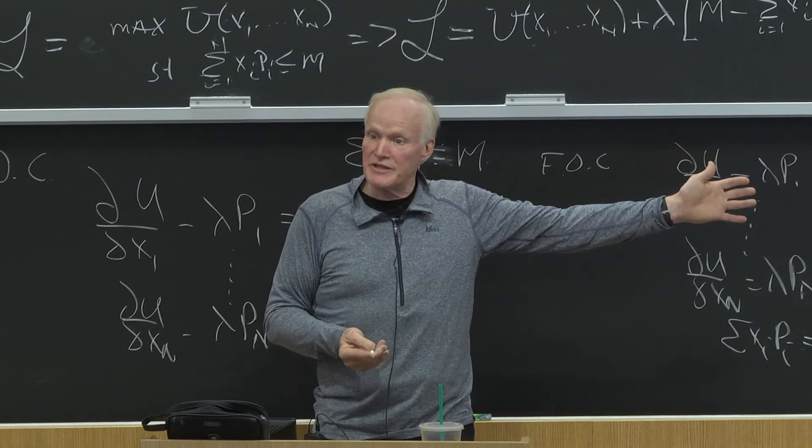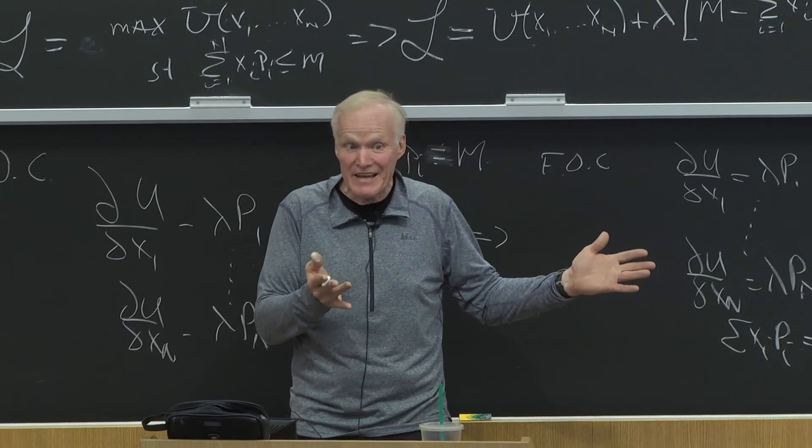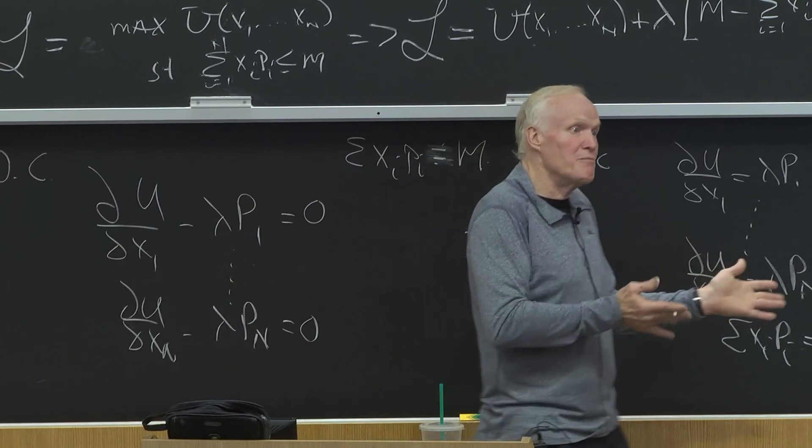They could have gotten cleaner teeth. That clearly would have benefited them. The fact that they chose not cleaner teeth but some other way means that, to a second order, they're actually even better off. Because they took something they valued even more than cleaner teeth. People understand how that works?